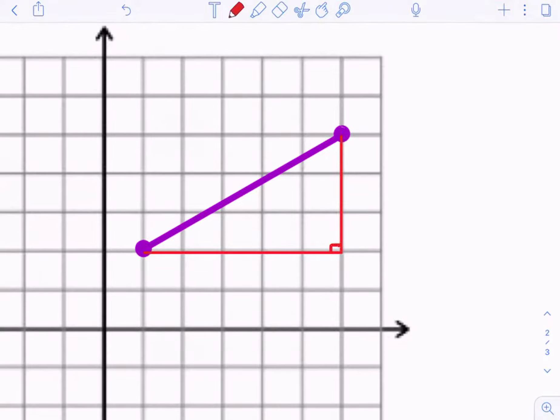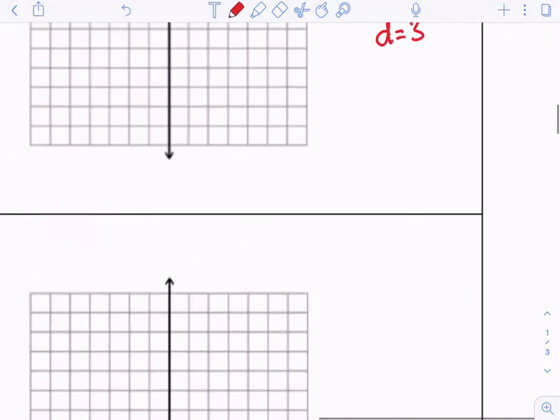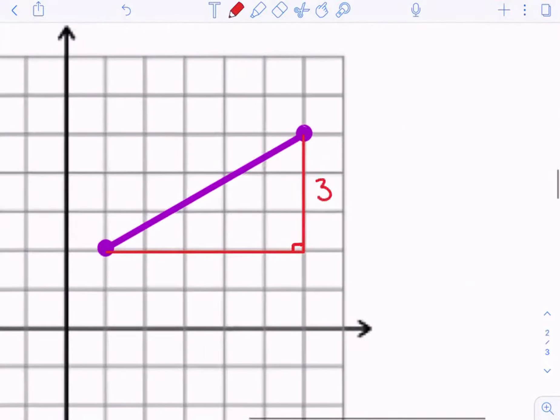And then I could easily say, hey, well, this distance right here is three spaces. And then the bottom distance right here, one, two, three, four, five spaces. Can I now easily find the distance here?